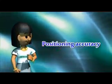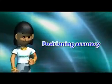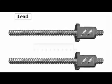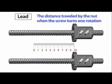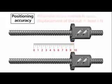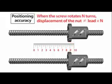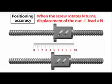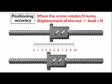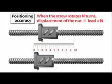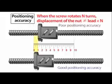Positioning accuracy depends on the concept of lead — the distance traveled by the nut when the screw turns one rotation. Loss of positioning accuracy may be caused by small differences in the lead due to manufacturing error. When the screw rotates 10 times, the displacement of the nut will not actually be exactly equivalent to 10 times the lead.